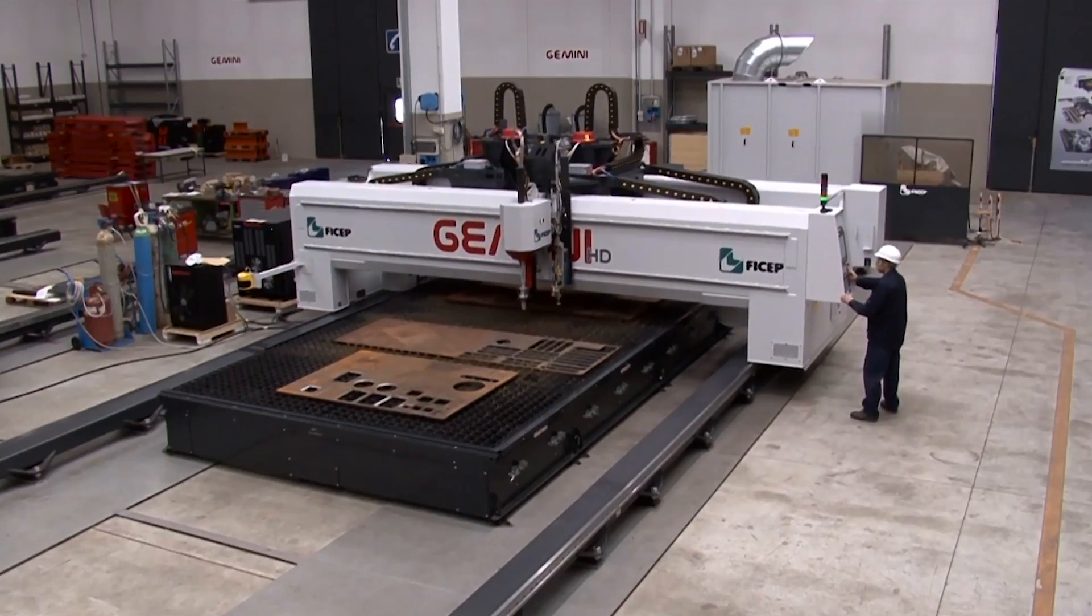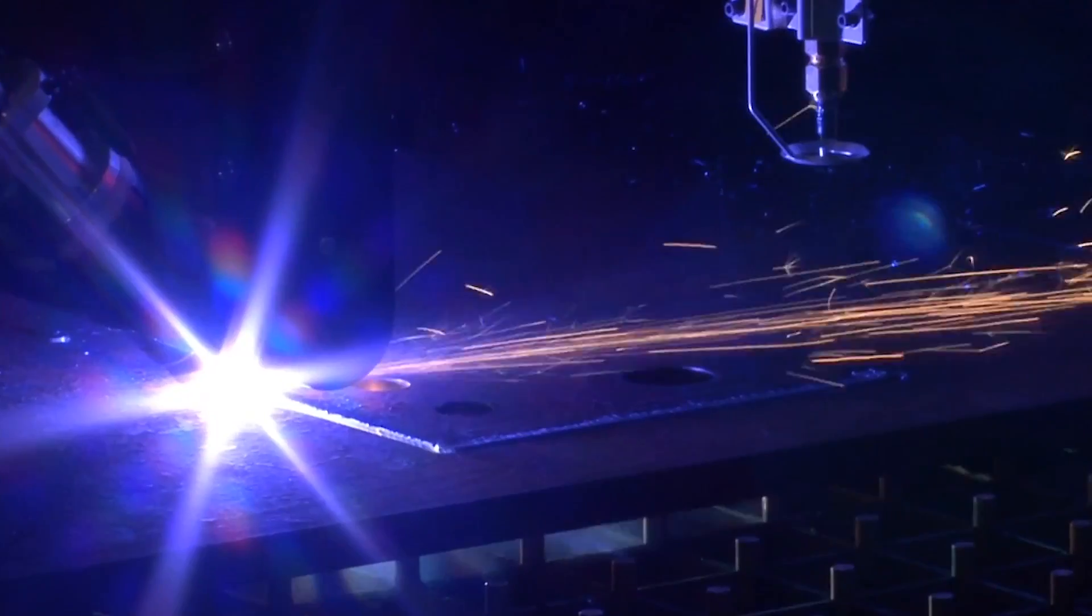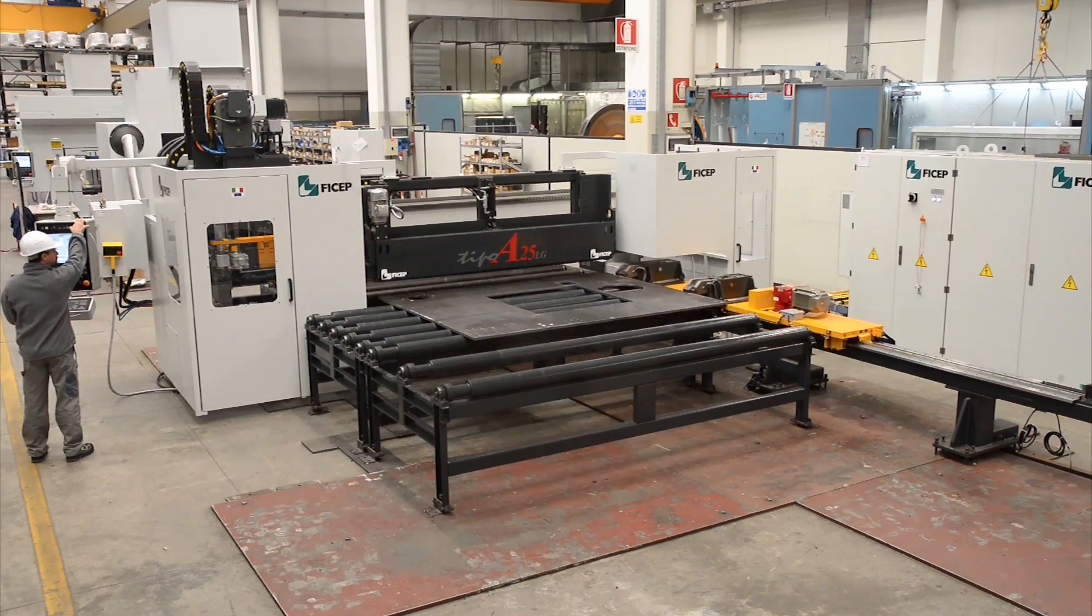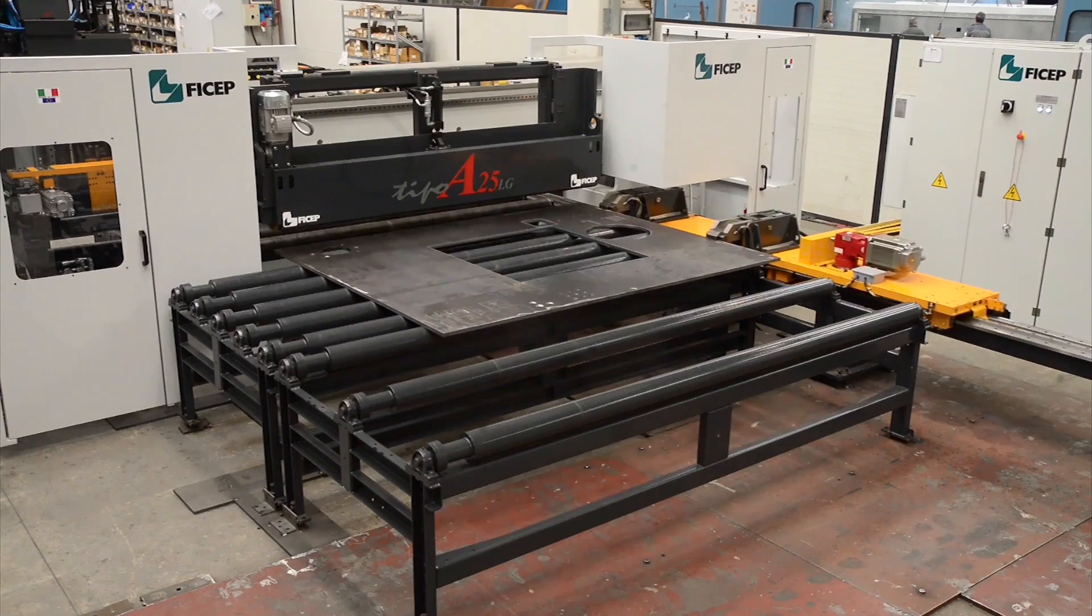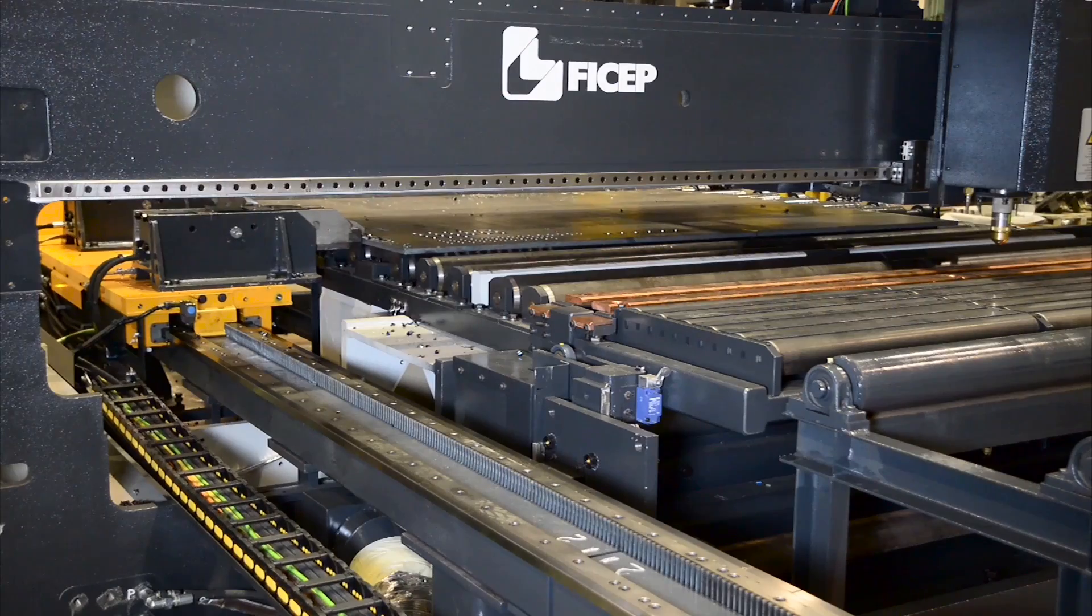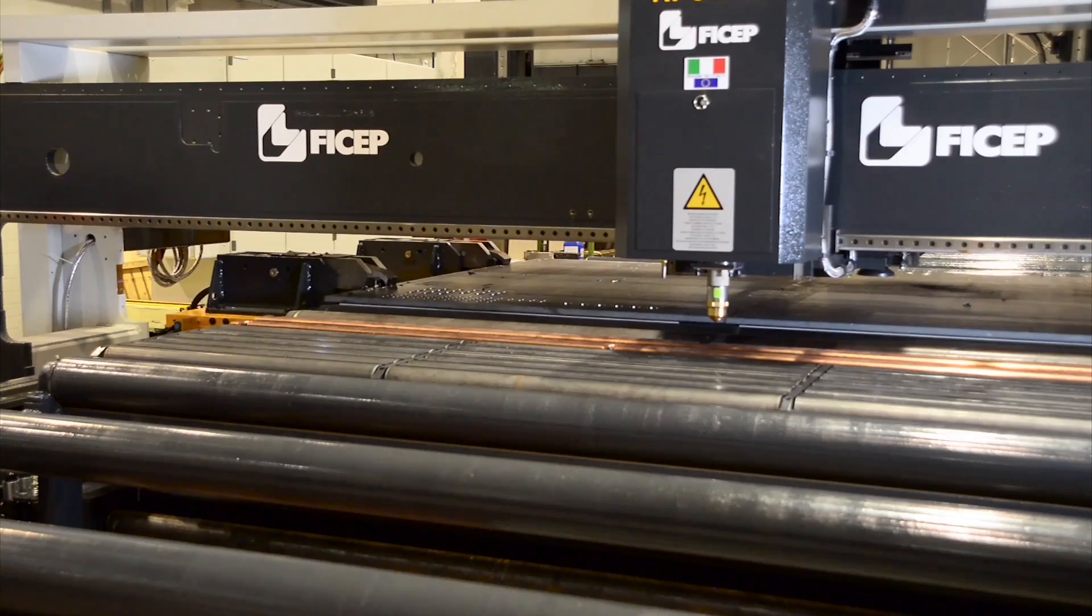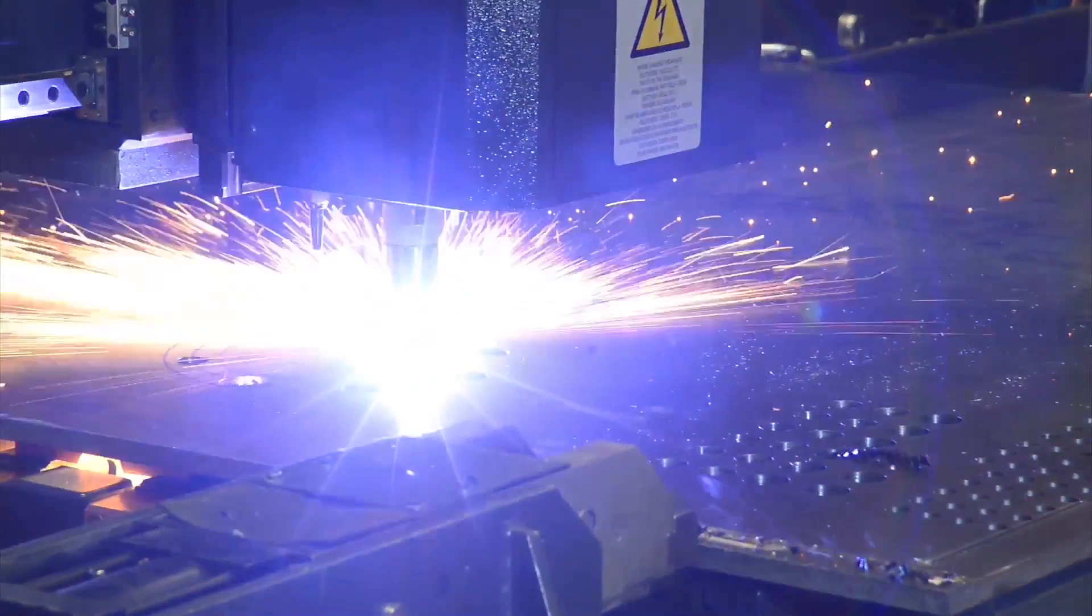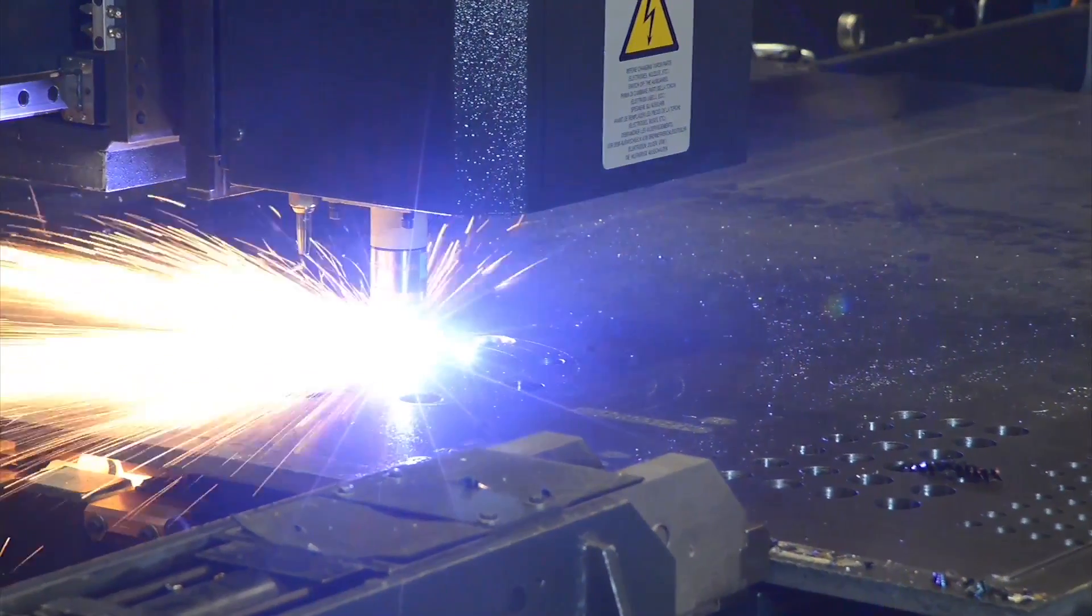The first are gantry style systems, where the plate remains stationary during the drilling and cutting processes. The other classification of plate processing systems is generally referred to as a pull-through design, where the plate is positioned in the length axis. In synchronization, the punching, drilling, and thermal cutting devices are positioned in the width axis.